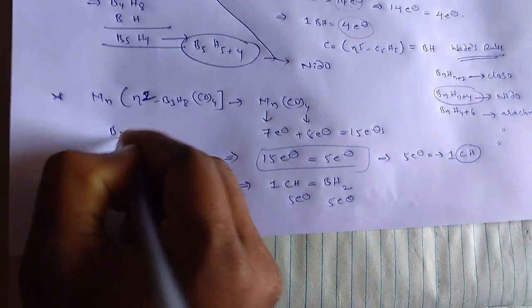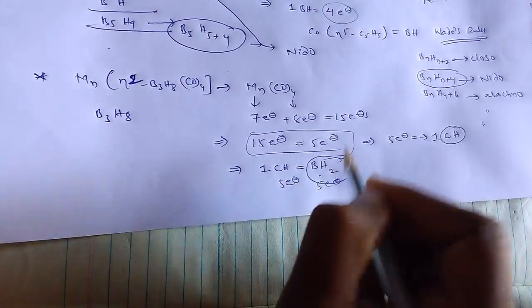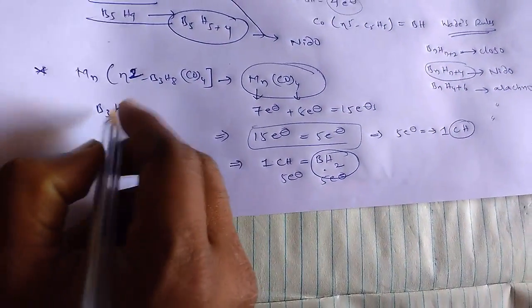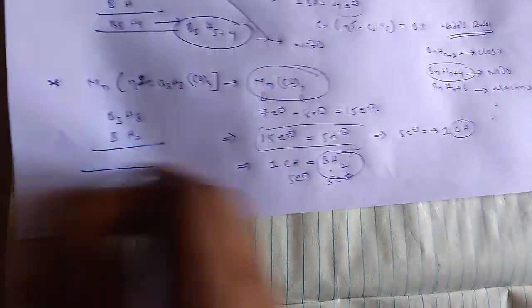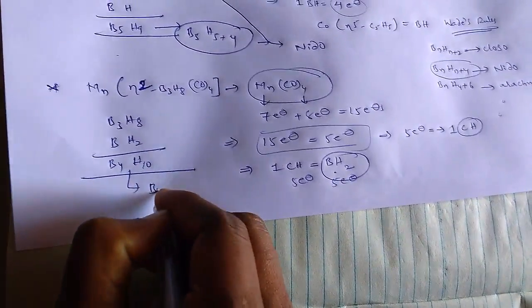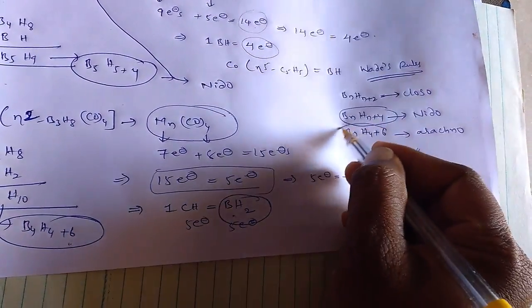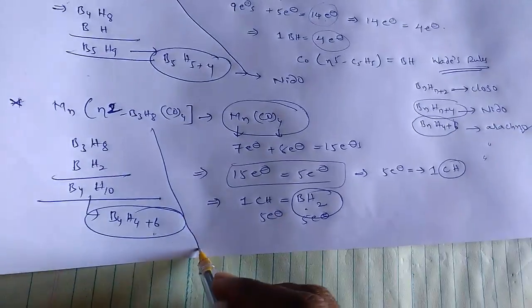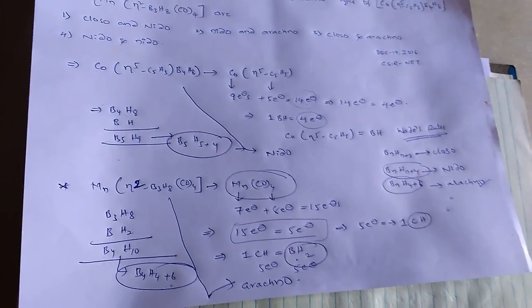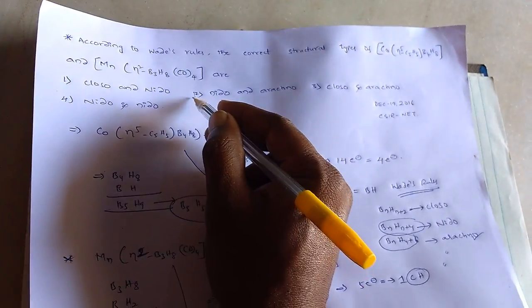In the given complex we have B3H8 and we need to add BH2 unit because this BH2 unit is equals to this total manganese complex MnCO4. So now H10 and B4. This equals to B4H4+6, so this is equals to BnHn+6 arachno. So that's why this complex is arachno. Answer is nido and arachno, so second option is the right answer for the given problem.